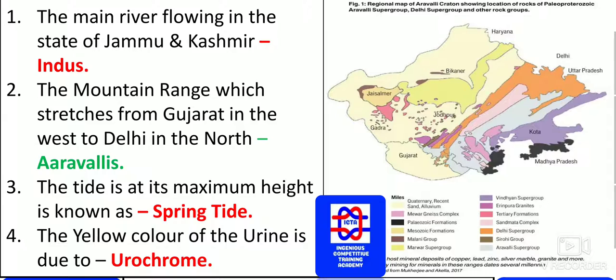The yellow color of urine is due to a pigment content known as Urochrome.